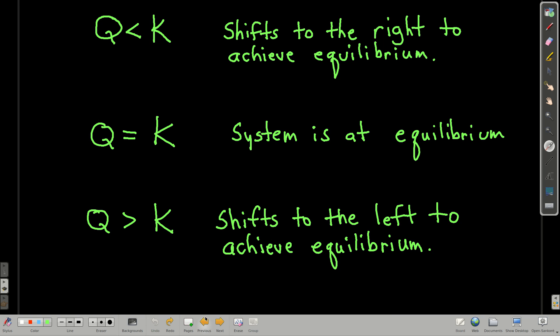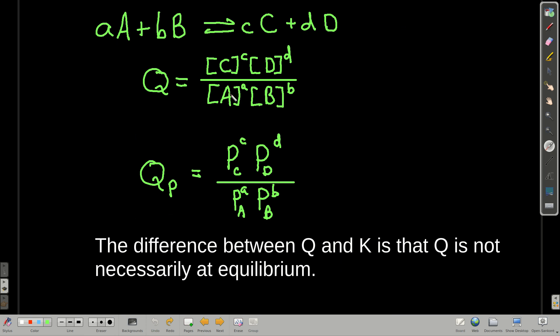Why is that? Well, if we go back and look at this, if Q is too small, that means the denominator is too big and the numerator is too small. The numerator are the products and the denominator are the reactants. So in order to get bigger, to be the same as K, the numerator has to get bigger, which means we need more products, and the denominator has to get smaller, which means we need less reactants, so it's going to shift to the right.